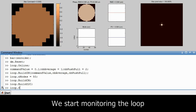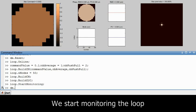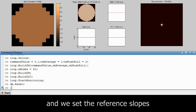Now we can start the monitoring of the loop. First we set the reference slopes.